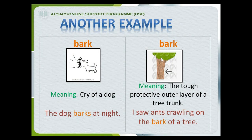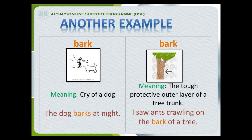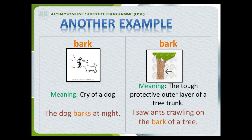Here is another example — the word bark. The spelling is B-A-R-K. Both spellings are absolutely the same and they are pronounced the same: bark. The first meaning is the cry of a dog — in a sentence: 'The dog barks at night.' The second meaning is the tough protective outer layer of a tree trunk — in a sentence: 'I saw ants crawling on the bark of a tree.' The spellings are absolutely the same, their pronunciation is the same, but the meanings are completely different.